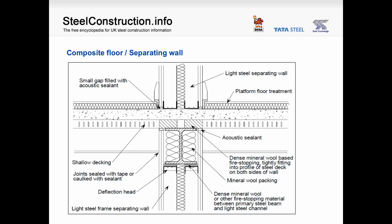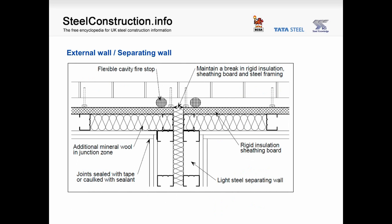At the junction between a composite floor and a separating wall, several things should be noted. A small gap has been left between the wall boards and the floor slab and filled with acoustic sealant. The voids above the steel beam and between the profiled steel decking have been filled with mineral wool, and the voids either side of the steel beam web have also been filled with mineral wool to prevent reverberation within the cavity. At the junction of an external wall and a separating wall, joints between plasterboard layers are sealed, additional mineral wool is applied near the junction zone, and no boards are continuous across the separating wall.